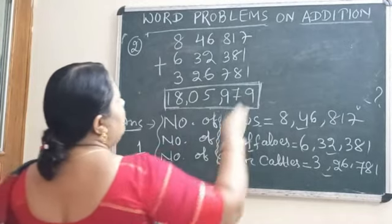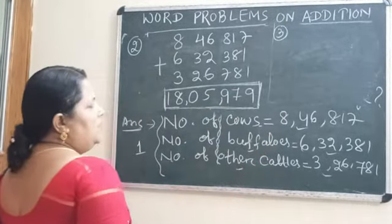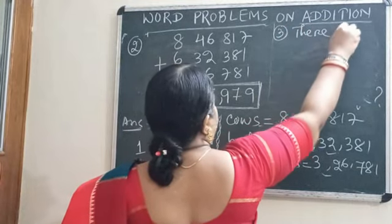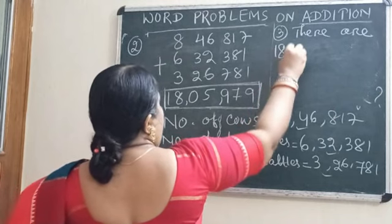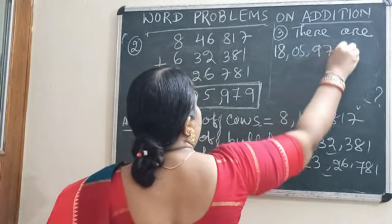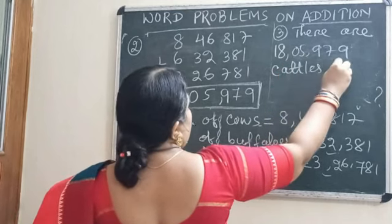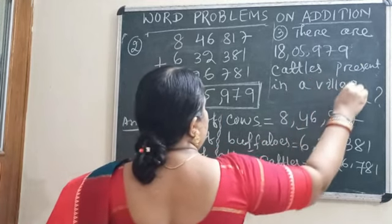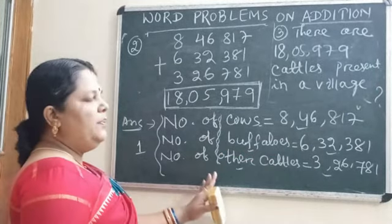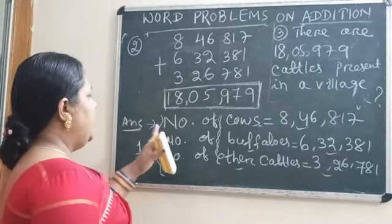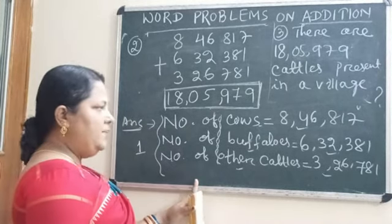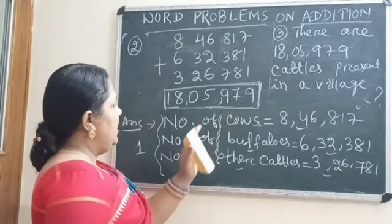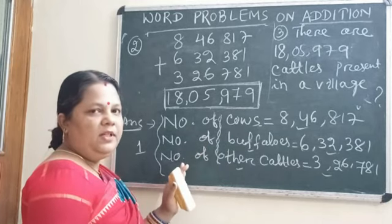The third part is the conclusion. The question asked for the total number of cattle in the village, so we write: therefore, there are 18,05,979 cattle present in a village. This completes the word problem by attending all three steps — first, write the statement; second, find the process; third, write the conclusion. If you attend all three steps, you can solve the problem in a systematic way.